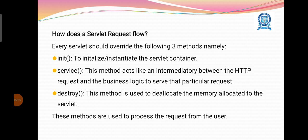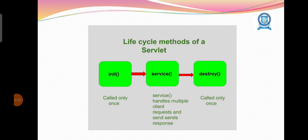Every servlet should override three methods: init, service, and destroy. Init is used to initialize or instantiate the servlet container. The service method acts as the intermediary between the HTTP request and the business logic to serve that request. The destroy method deallocates the memory allocated to the servlet. In the servlet lifecycle: first, the init method initializes the servlet; then the service method processes the request and creates the response; finally, the destroy method deletes the servlet and deallocates its memory.